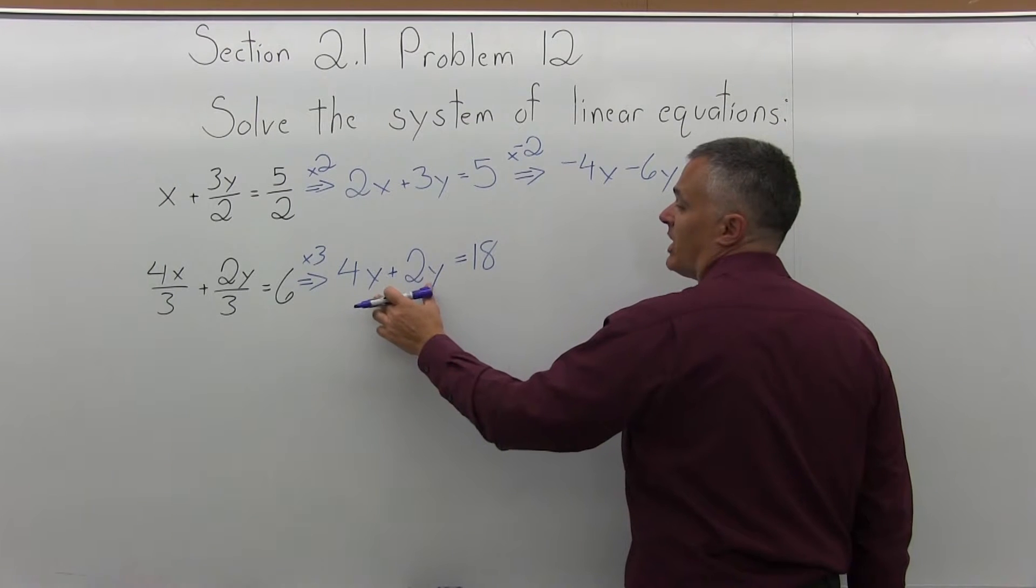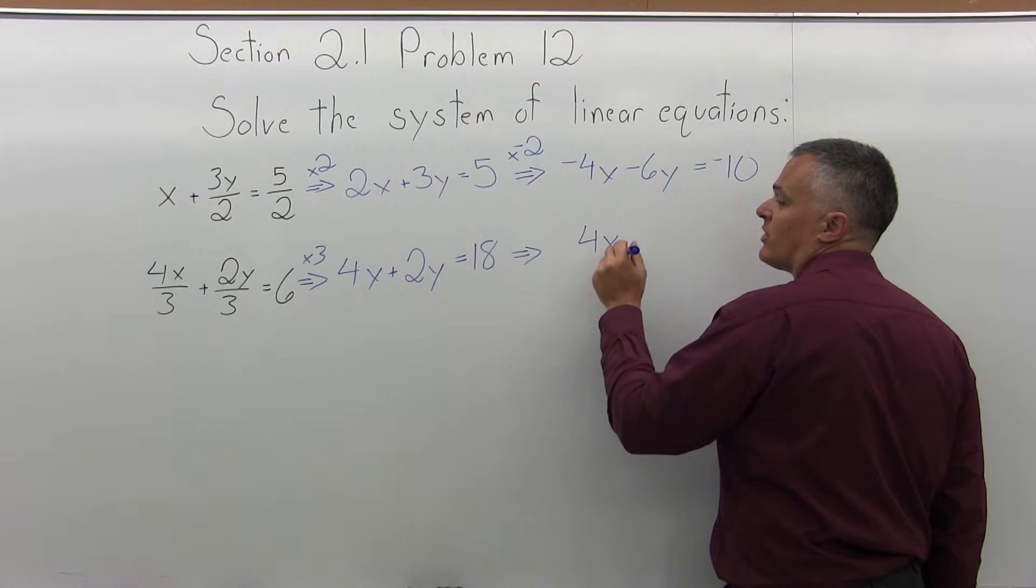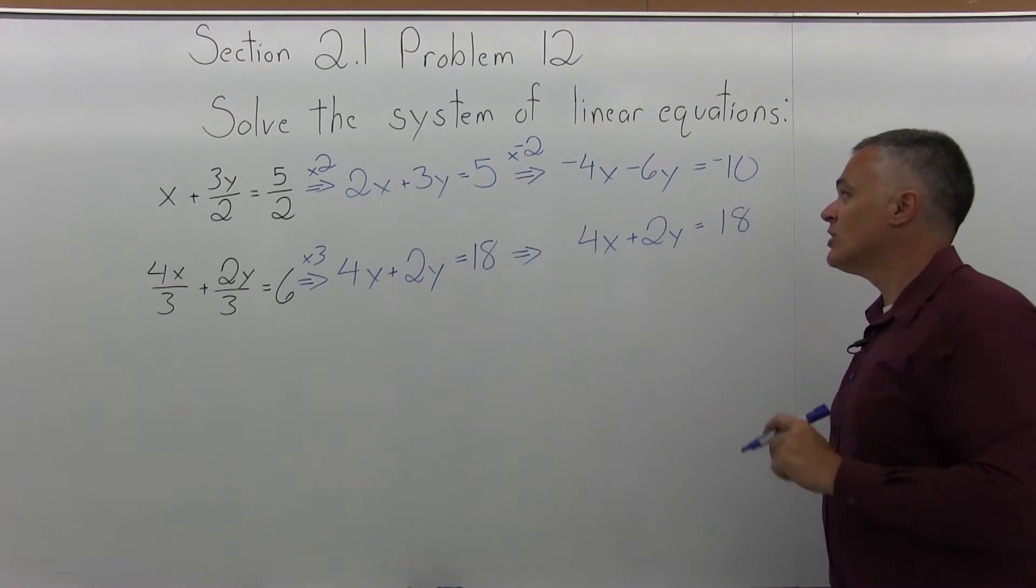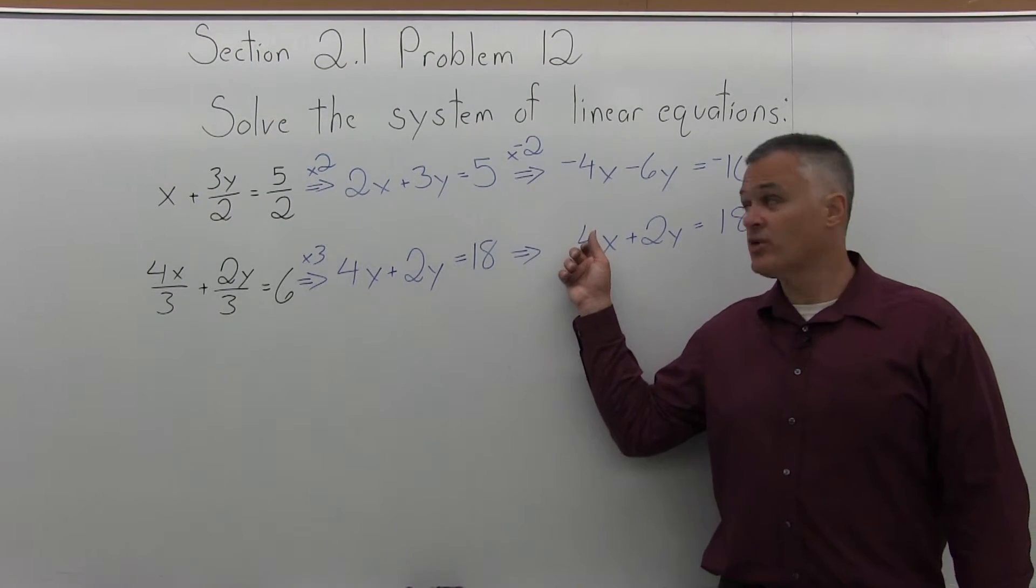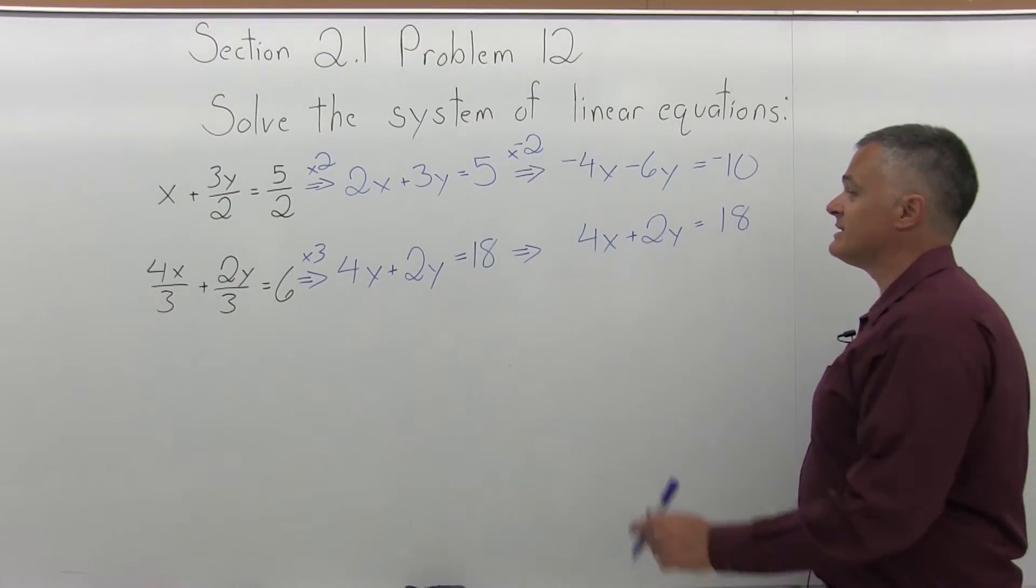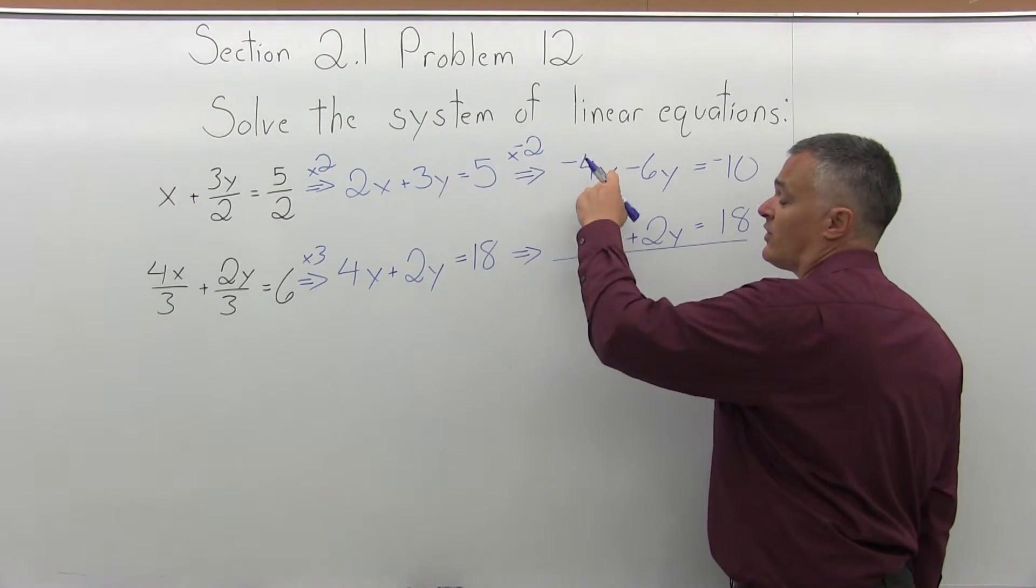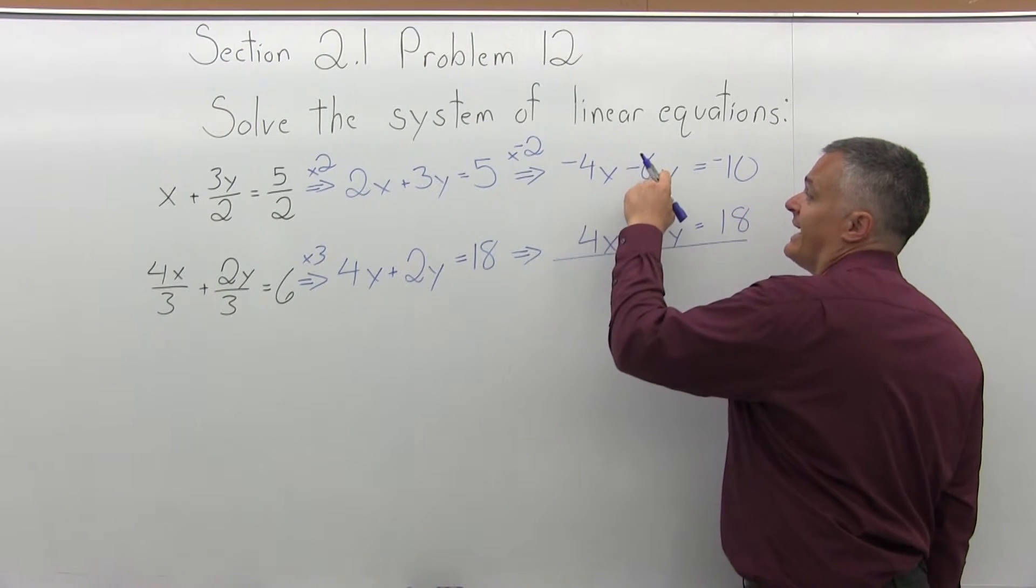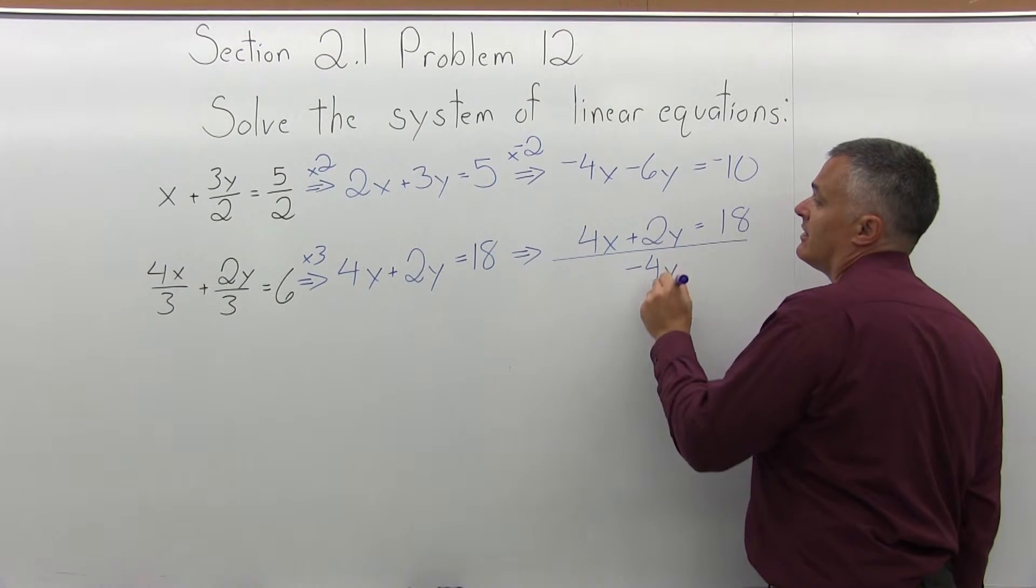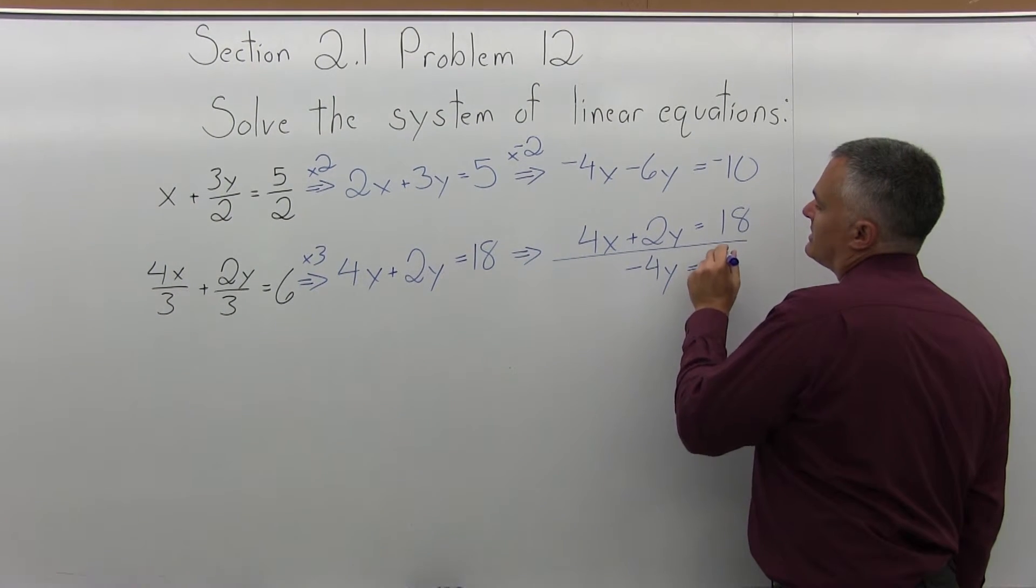And the bottom equation is good the way it is. So I'll just copy it right underneath the top equation, 4x plus 2y equals 18. So now one of my variables has the same number in front, but with opposite sign. I have negative 4x, positive 4x. Now I can finally go on to step 2. Step 2 is add the equations together to cancel one of the variables. So negative 4x and positive 4x will cancel. Negative 6y and positive 2y will be negative 4y. And then negative 10 and positive 18 will be positive 8.